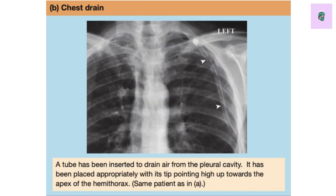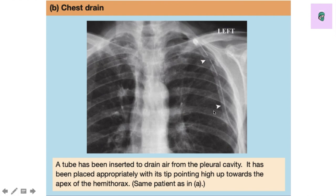Next is the chest drain. These days exams tend to ask a lot of equipment-related questions — pulmonary valves, aortic valves, mitral valves, and chest drains — to assess your clinical exposure. This has been more dominant since the August 2020 FMG exam. You can see the tip of the drain here, and the multiple holes indicated by the arrowhead. The tube has been inserted into the pleural cavity with its tip pointing upward toward the apex of the hemithorax to drain the pneumothorax.